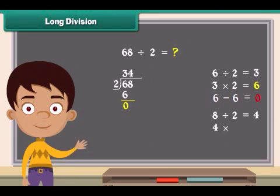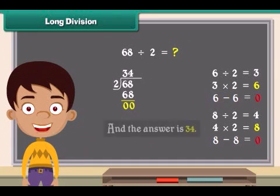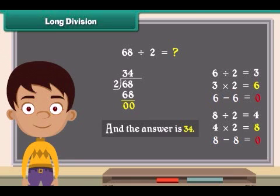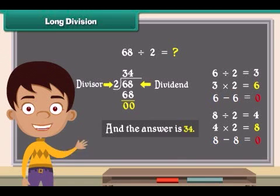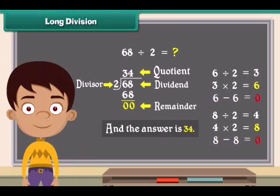Multiply the 4 and the 2 and put the answer right under the 8. Do the subtraction. That is 8 minus 8 is equal to 0. We ended with a 0 at the bottom. And the answer is 34. Here 68 is dividend, 2 is the divisor, 34 is the quotient, and remainder is 0.